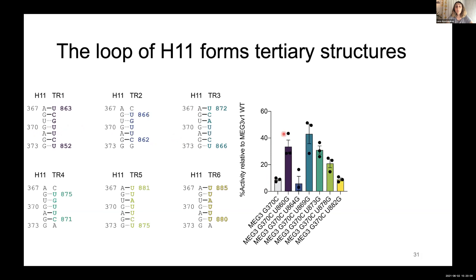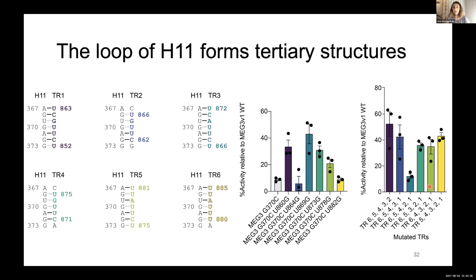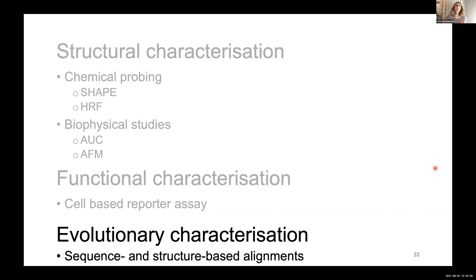Rescue mutations in individual TRs can restore MEG3 function, but not at the same level for every TR. In a complementary experiment where we maintained helix 11 wild type but mutated all but one TR — to force pseudoknot formation with only that one TR — we again see a minimal level of activation, confirming that not all TRs are equally potent in driving this functional conformation.